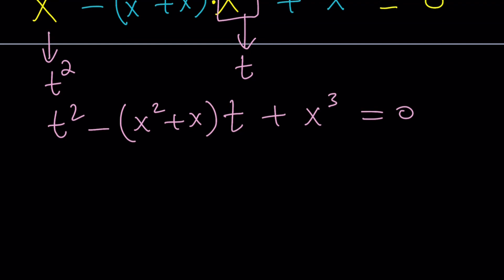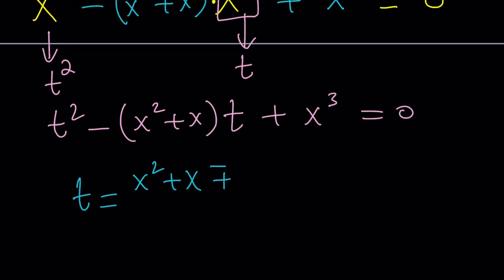What am I going to do? You can use the quadratic formula or just factor this. If you use the quadratic formula, this is what you're going to get. t equals negative b. By the way, the coefficient of t is b here. Opposite of that is x squared plus x plus or minus the square root of b squared, minus 4ac, which is minus 4x cubed. And then I have to divide the whole thing by 2.